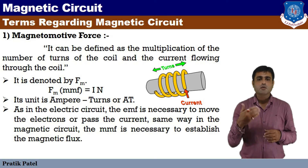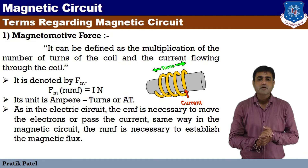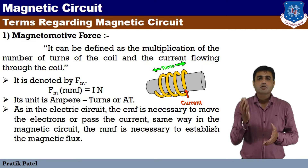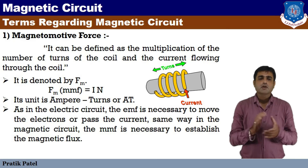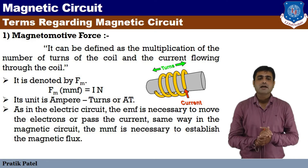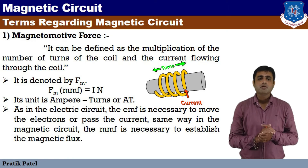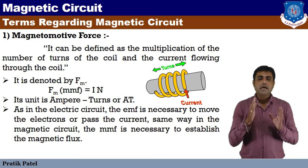You have a conductor, you have a coil, and then you have a current I. The number of turns we call N, and the current flow is I. The product of the two gives the magnetomotive force. So the equation is: F is equal to I into N, where F denotes the magnetomotive force.